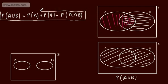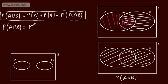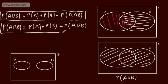You won't be asked to show or prove that, but it gives you some idea of why it works. A useful result of the addition formula is that you can rearrange it: the probability of A intersection B is equal to the probability of A plus the probability of B minus the probability of A union B. These rearrangements can help us solve a number of problems.